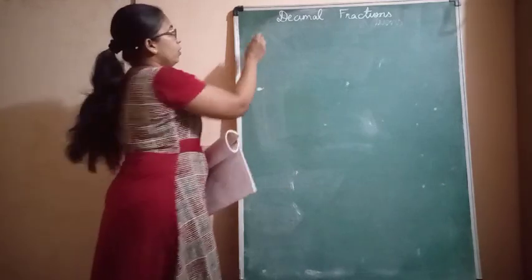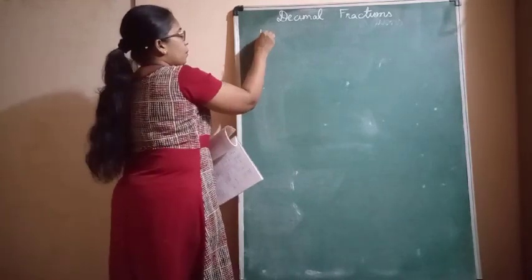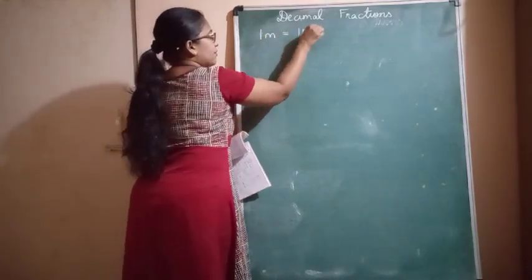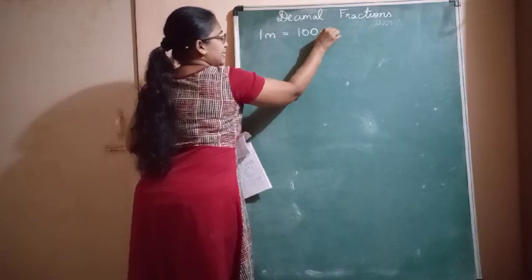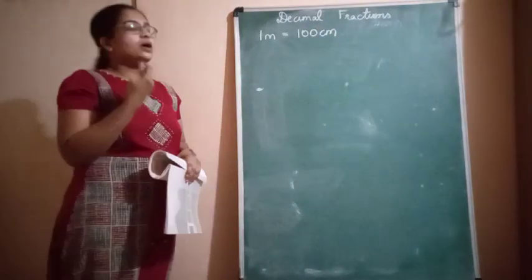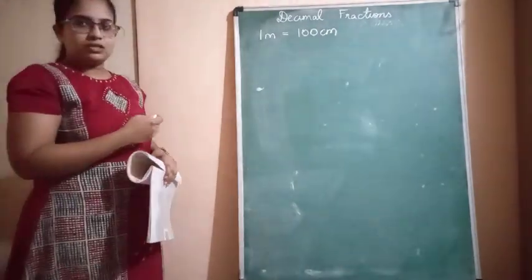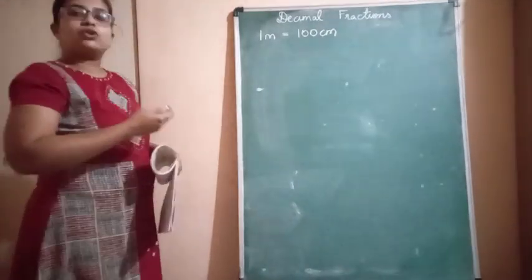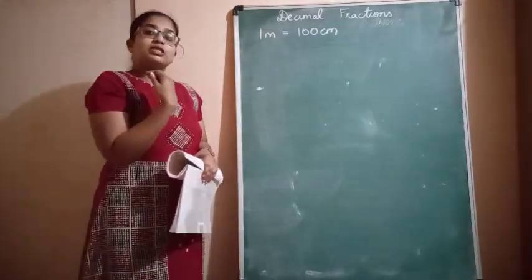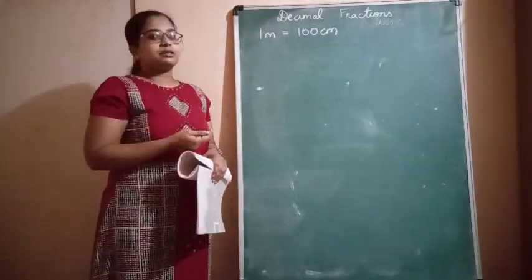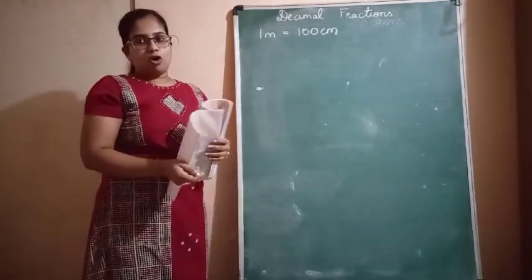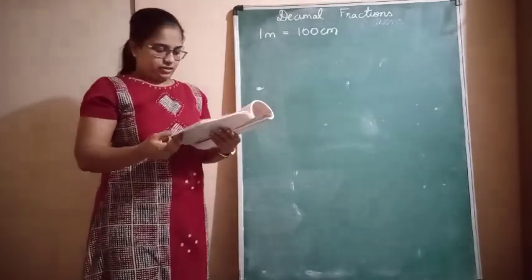As you know, 1 meter is equal to 100 centimeters. When you convert centimeters to meters, what you have to do is divide by 100. So the 100th part would give you the value in meters.